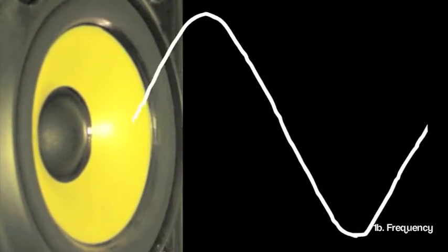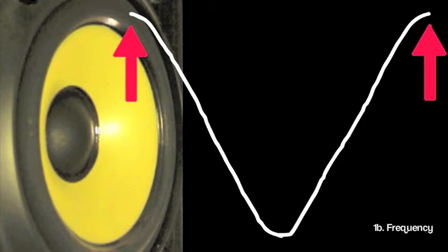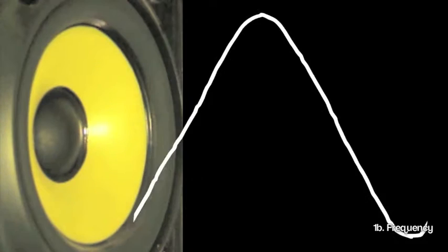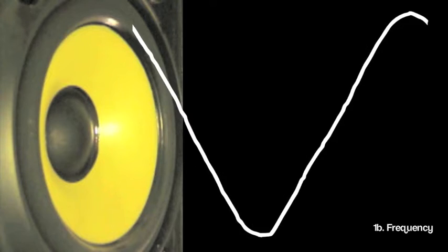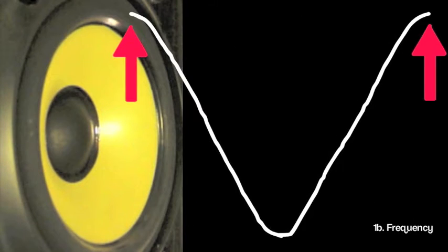When we talk about frequency, what we're really asking is how often does a wave occur? And that makes sense, right? Frequency, how frequently does it happen? So when we're looking at a wave, the easiest way to see how frequently it happens is to look at it from one peak to the next peak. So in our speaker example here, a peak represents the speaker being pushed all the way out. So one cycle for the speaker is from being pushed all the way out, pulling all the way in, and pushing all the way out again from peak to peak.